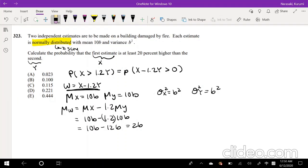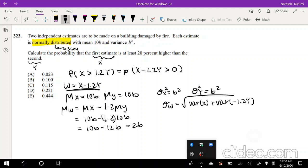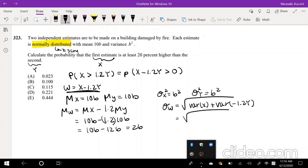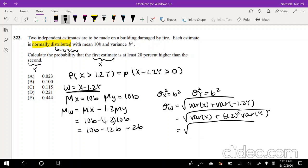Okay, so now we just have to find the standard deviation of W. And again, standard deviation is the square root of the variance. So we can say this is equal to the variance of X plus the variance of negative 1.2Y. And then this can be simplified to variance of X plus... we can just take this 1.2 out. But again, this is one of the properties of variances that you have to square it when you take it out. So it becomes variance of X plus 1.2 squared times variance of Y.